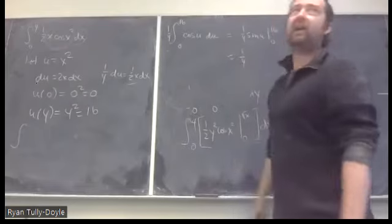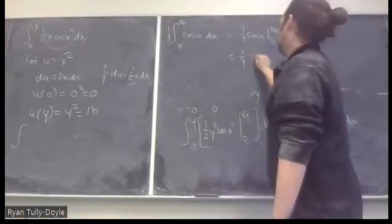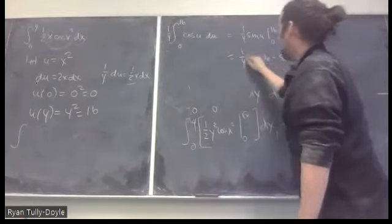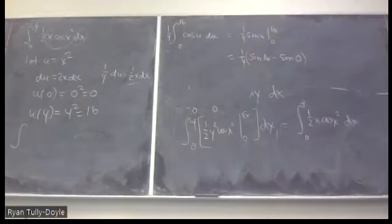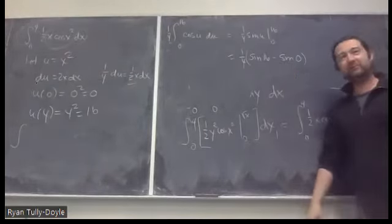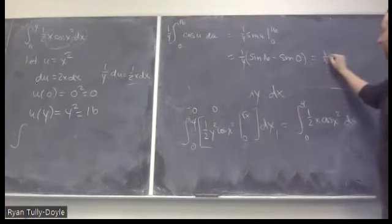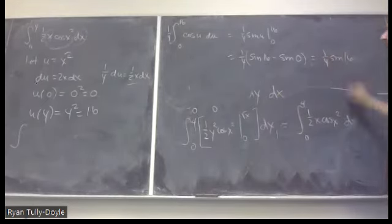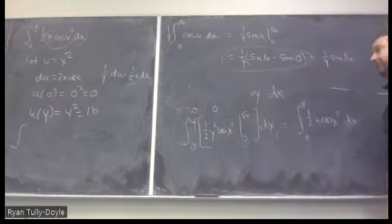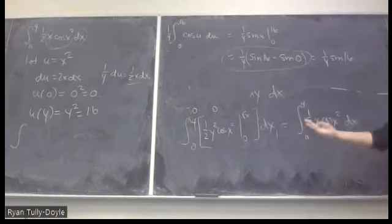So we get (1/4) sin(u) from 0 to 16, which is (1/4) sin(16). Remember: u-substitution is a thing. It can be done. It's a basic technique I expect everyone here to be able to do. If you don't remember how u-substitution works, let me know so we can practice.